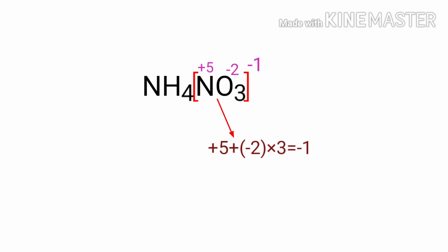By the rules of assigning oxidation numbers, the oxidation number of hydrogen is plus one in all metals.